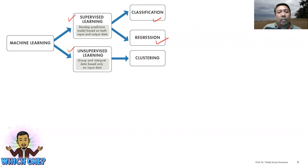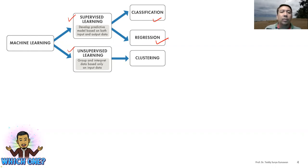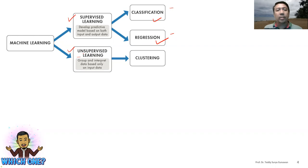We also have the regression type, which is numeric prediction. For example, you want to predict what the temperature will be tomorrow — say 25.8 degrees — so this would be a floating point number. For unsupervised learning, the machine will learn by itself. We do not provide annotated data to the machine.